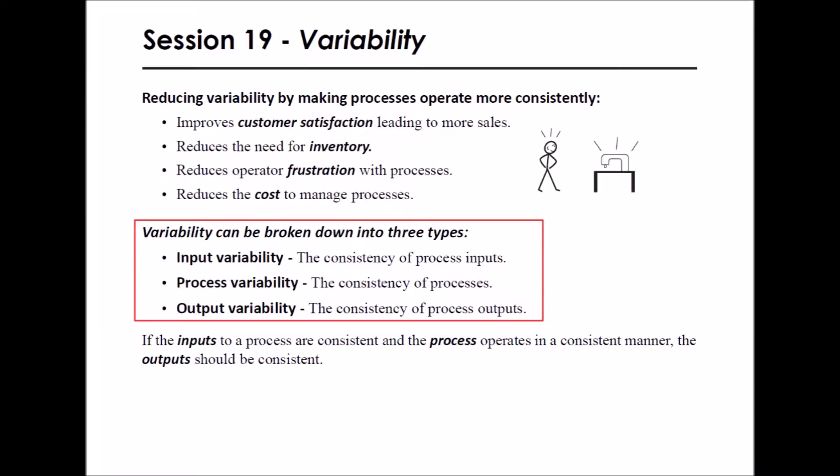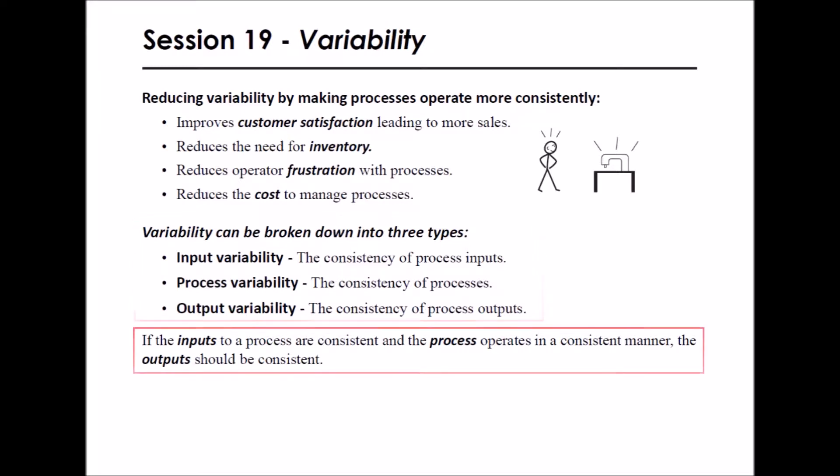Variability can be broken down into three types. Input variability is the consistency of process inputs. Process variability is the consistency of processes. Output variability is the consistency of process outputs. If the inputs to a process are consistent and the process operates in a consistent manner, outputs should be consistent.